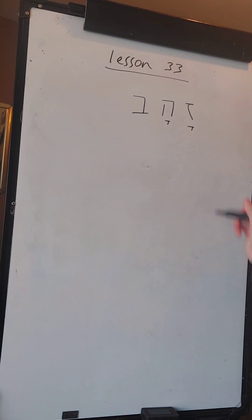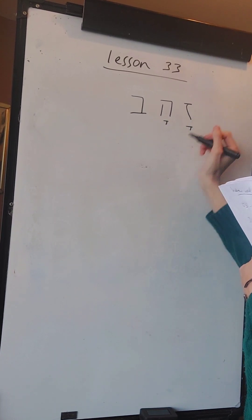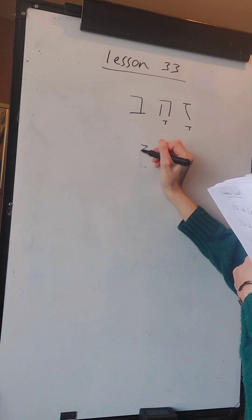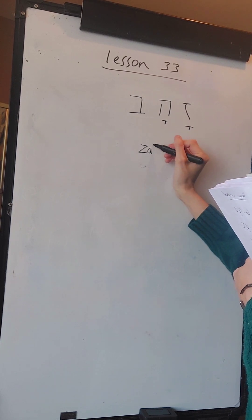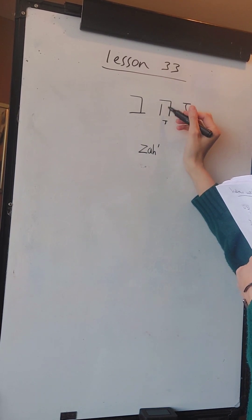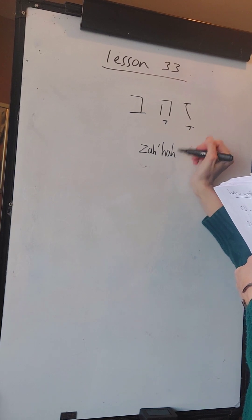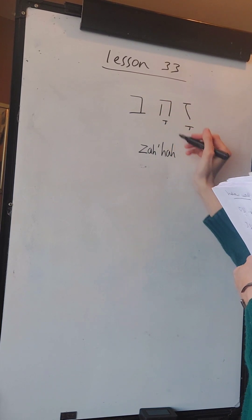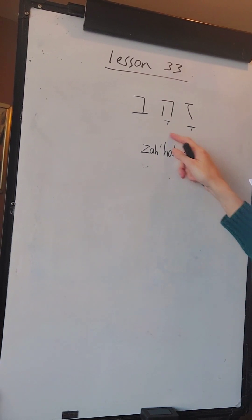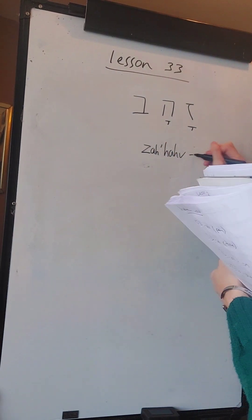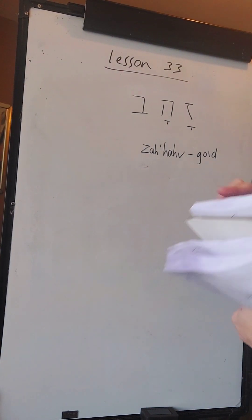This Hebrew consonant is the Zayin, which sounds as Z. The little T shape is the A vowel. This is the He which sounds as H with the A vowel underneath. And the Vet at the end - ZAHAV, which means gold.